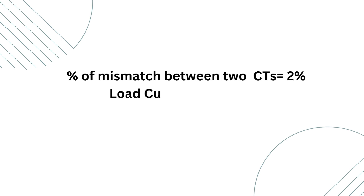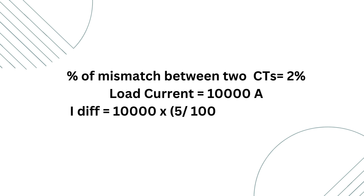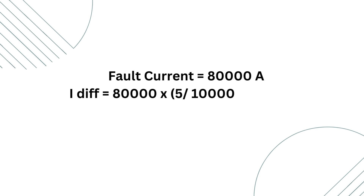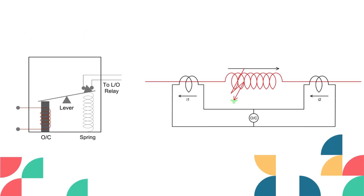Let's take an example. The percentage mismatch between two CTs is 2%. For a maximum load current of 10 kilo-ampere, we multiply 10 kA by the CT ratio (5/1000) and by 2/100 to get the 2% value — the result is 0.1 ampere, which is less than the set value of 0.5 ampere. But if the fault current is 80 kilo-ampere, the differential current will be 0.8 ampere, which can cause the differential relay to make the trip contact. We need the differential relay only for internal faults — for external faults, there are dedicated relays with different logic. So we need to ensure the differential relay only acts for internal faults, not external faults.